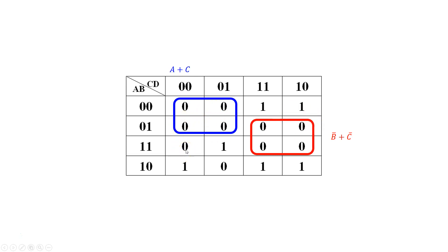The remaining uncovered zeros: one zero can group with an adjacent zero. In that group, A changes, B does not change, C does not change and equals zero, and D does not change and equals 1 — so not D. This gives us B or C or not D.